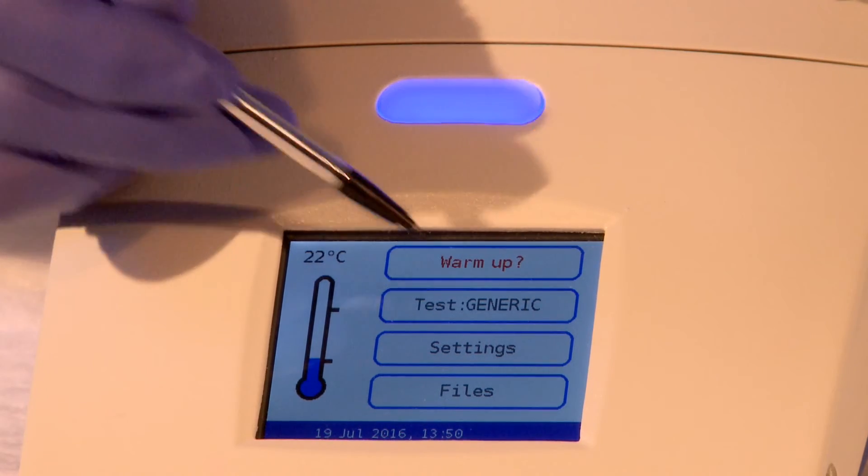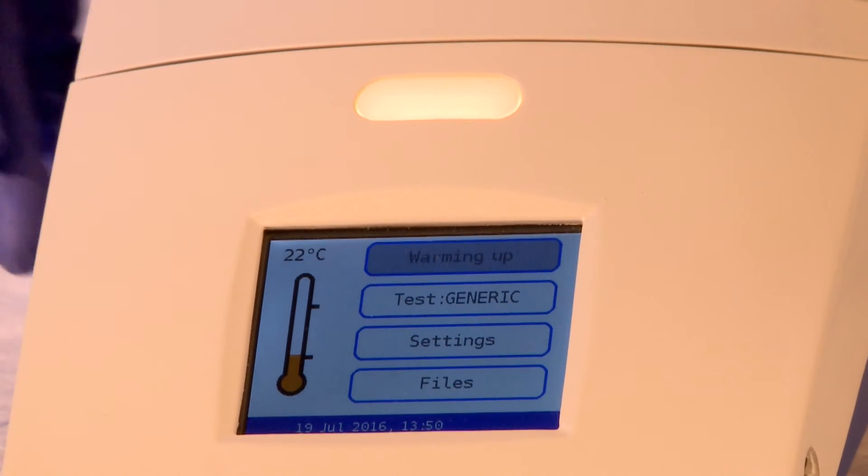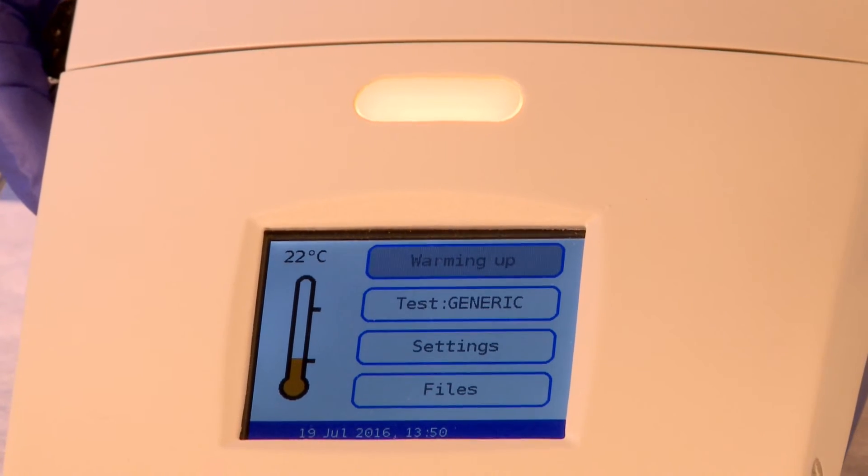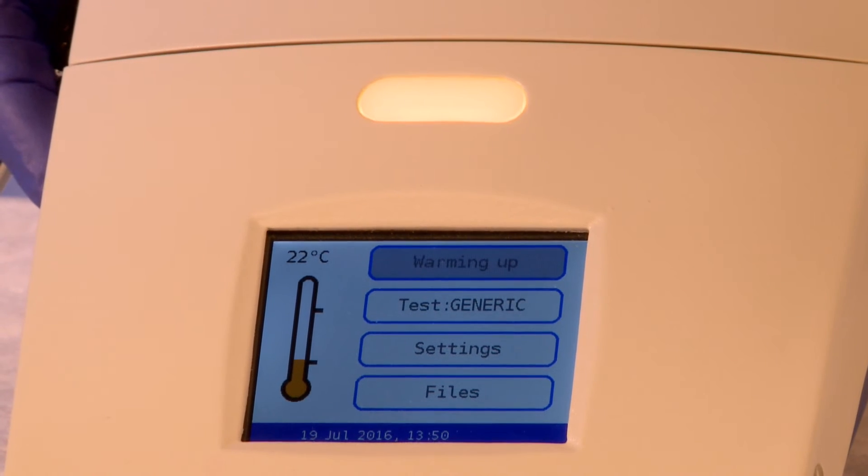Using the stylus, press the Warm Up tab. The message on the touch screen will change to gray and the words Warming Up will appear. In addition, the light on the head of the unit and the color of the thermometer will change to orange.